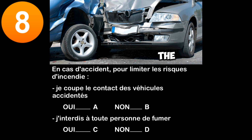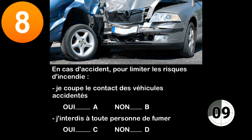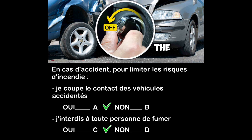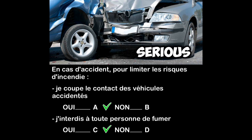Question eight: in the event of an accident, to limit the risk of fire — do I cut off the contact of damaged vehicles, yes or no? Do I prohibit anyone from smoking, yes or no? At the scene of an accident, to limit the risk of fire, I cut off the contact on all vehicles involved. However, electricity is not the only cause of fire — it is also necessary to ensure that no one smokes, because in contact with hydrocarbon vapors, the slightest cigarette butt can cause a very serious fire.